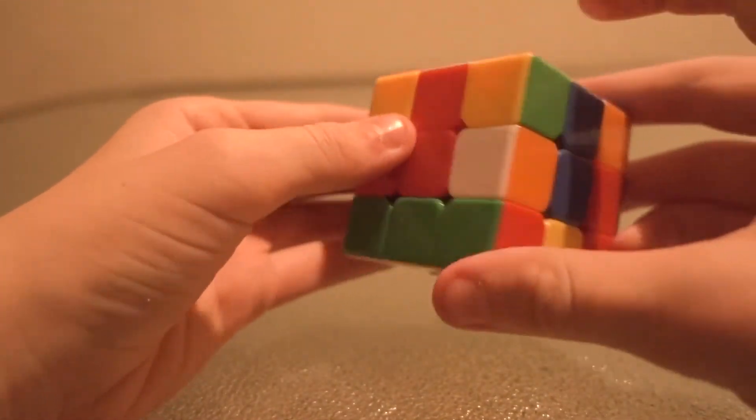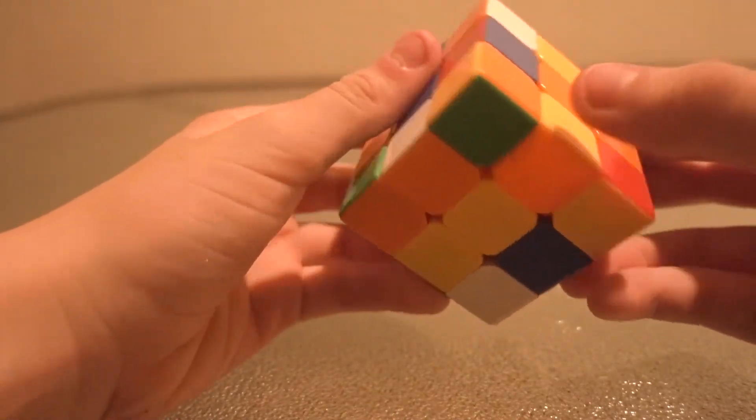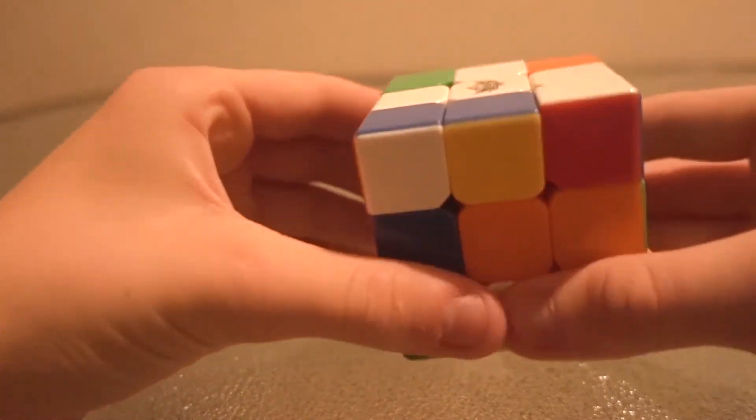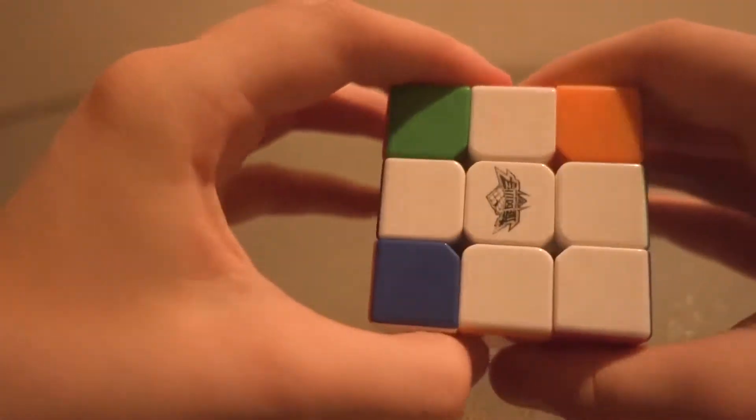Now we have to find that, which is right here. So what you're going to do is you're going to bring it down, then go like that. Now it's right here. Turn it over, bring it to the right, bring the middle down, bring it to the left, and bring it back up.